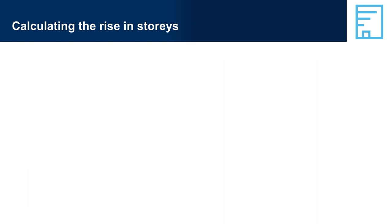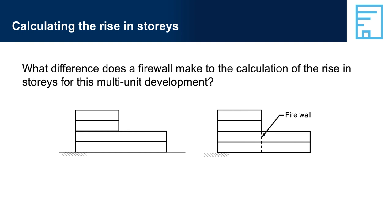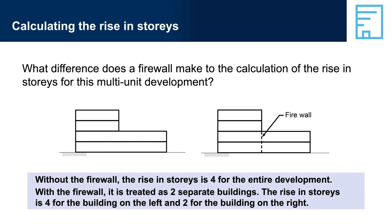Calculating the rise in stories: What difference does a firewall make to the calculation of the rise in stories for this multi-unit development? Without the firewall, the rise in stories is four for the entire development — the two-storey section must also be built to meet the fire protection provisions that apply to the four-storey section. With the firewall, the rise in stories is four for the left section and two for the right section, so the provisions that would apply to each section are potentially different. This doesn't mean that the builder would automatically build the two sections to different standards.